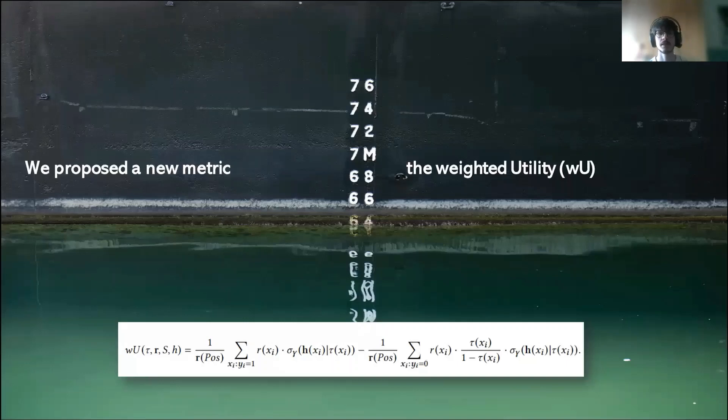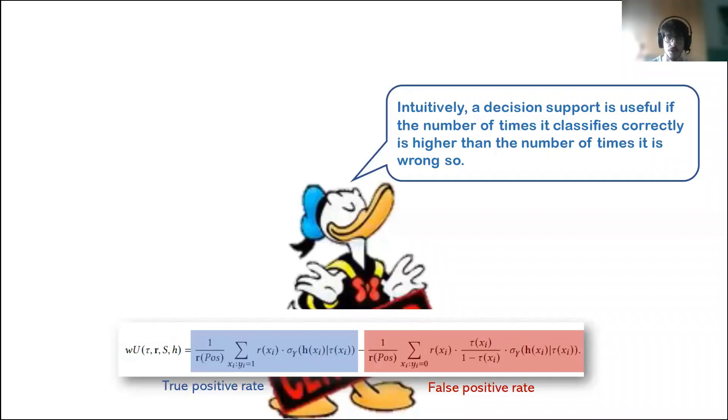So to address these limitations, in this article we proposed a new metric that we called the weighted utility, which is not based on standard accuracy metrics, but is on the other hand a generalization of a utility metric which is called the net benefit. You can see the formula for the weighted utility on the bottom part of the slide, and in the next slides I will try to explain a little more this very complex mathematical formulation.